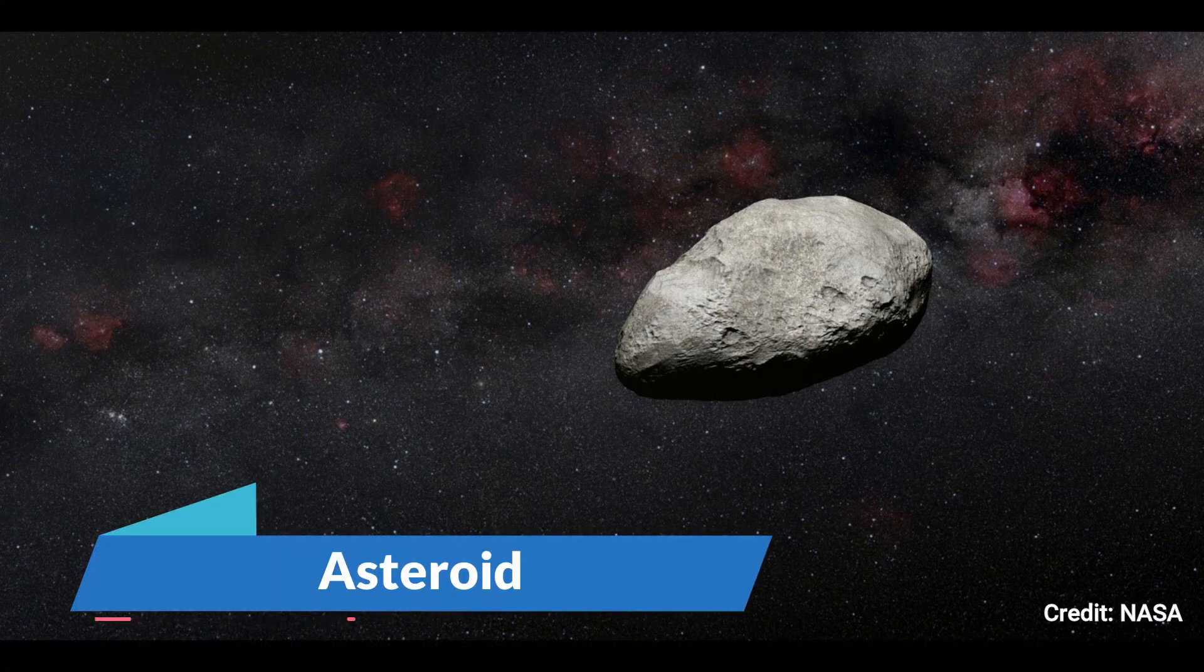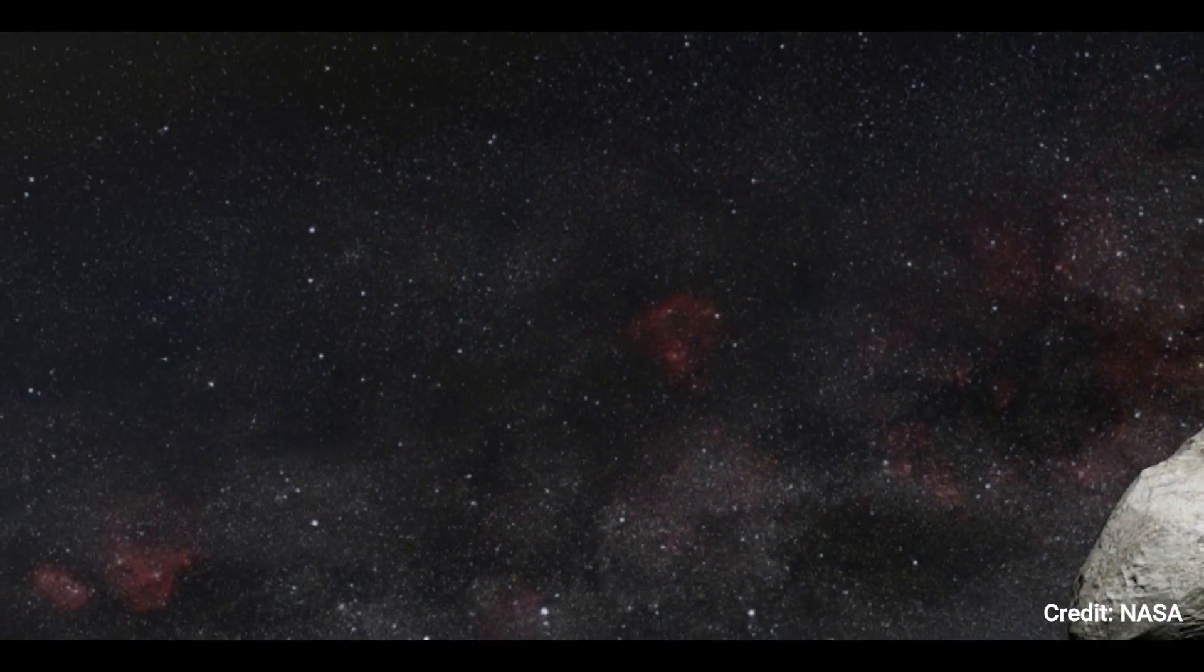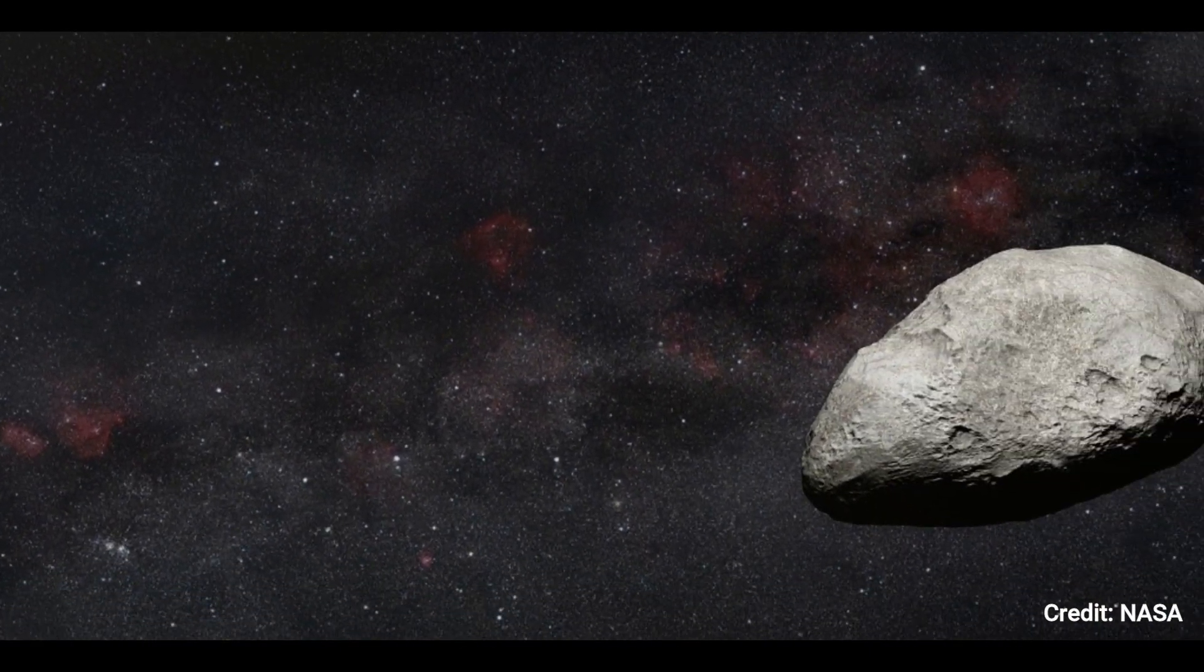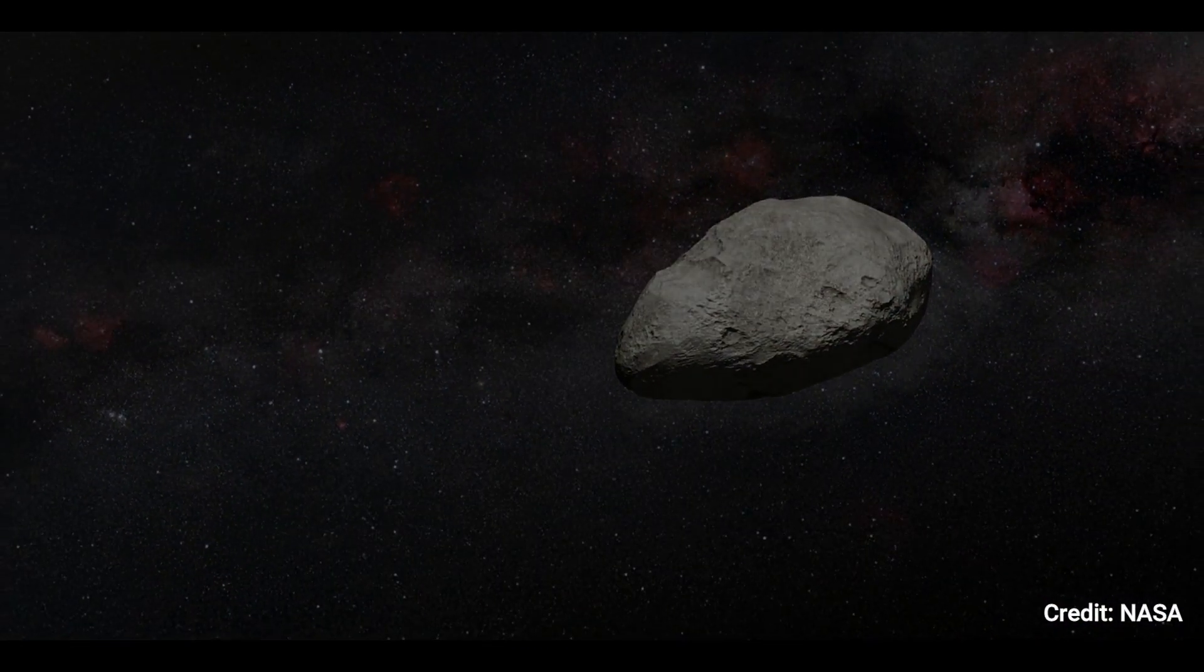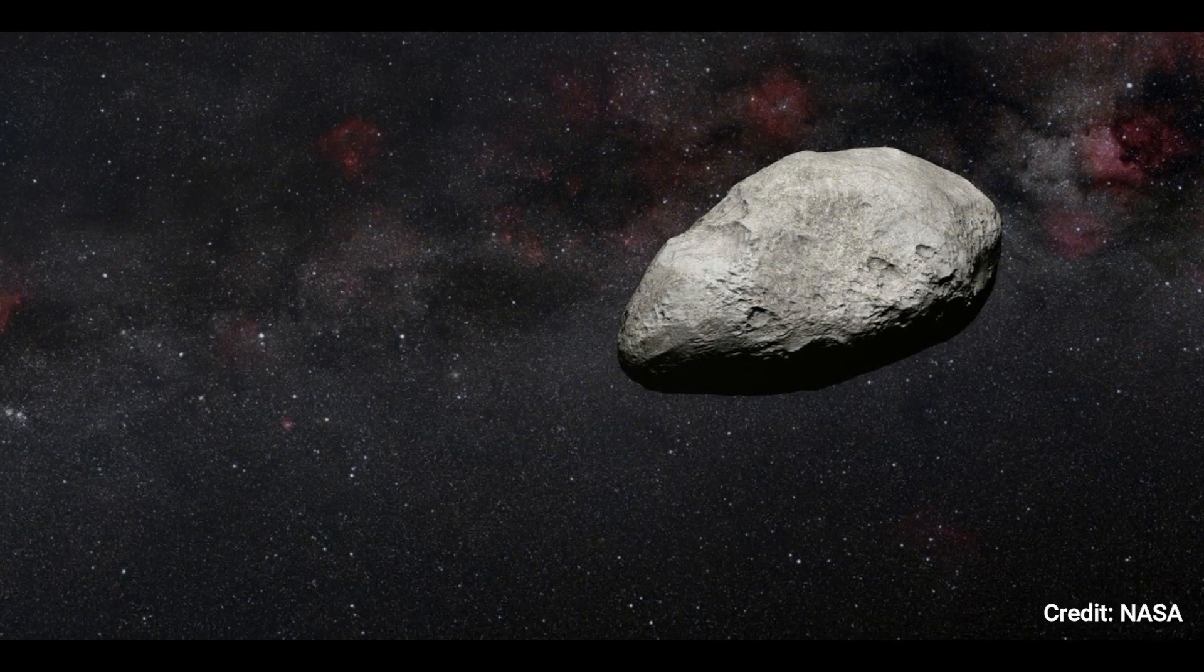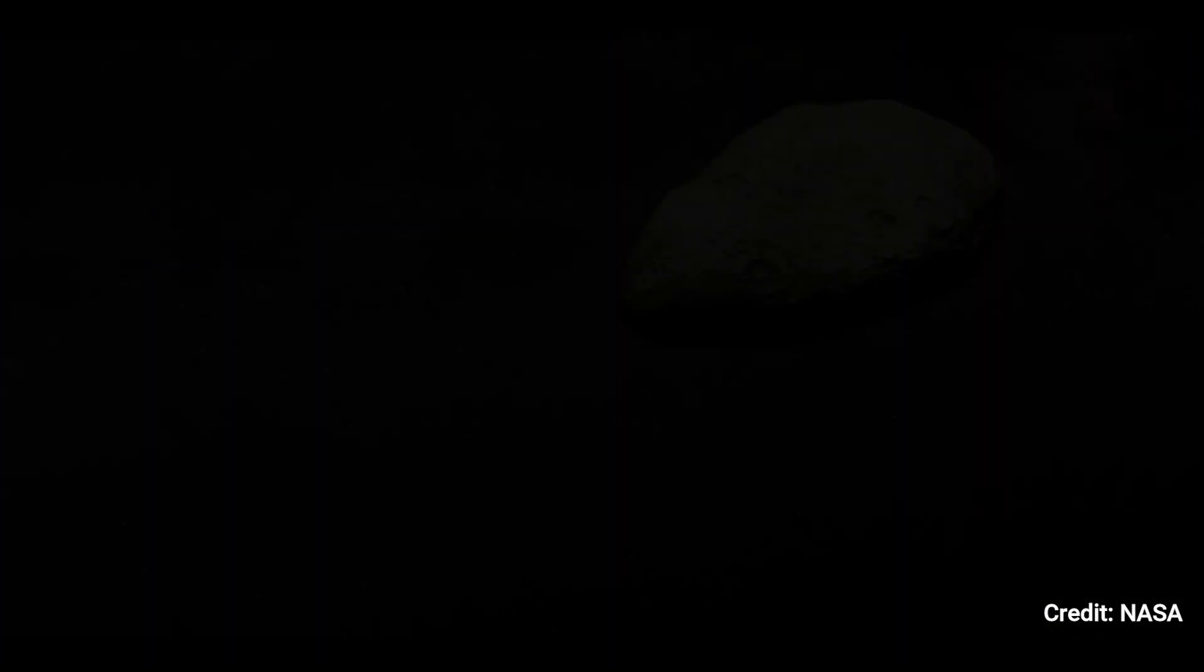Number 1. Asteroid. An asteroid the size of Rome's Colosseum, measuring between 300 and 650 feet, has been discovered by an international team of European astronomers using NASA's James Webb Space Telescope.